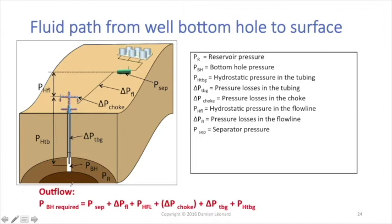When you need to calculate the bottom hole flowing pressure, the method is always to start from the point you want to reach, so in our example the separator, the production separator, and so you start with the pressure of that point you want to reach, and you add all the pressures that you meet along the path.